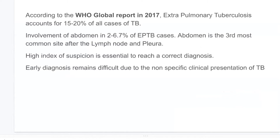This topic covers abdominal tuberculosis. According to the WHO global report in 2017, extra-pulmonary tuberculosis accounts for 15 to 20% of all cases of tuberculosis, and involvement of the abdomen is the third most common site after lymph nodes and pleura. A high index of suspicion is essential to reach a correct diagnosis.